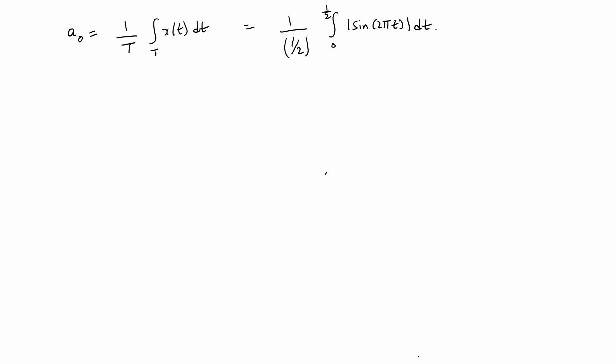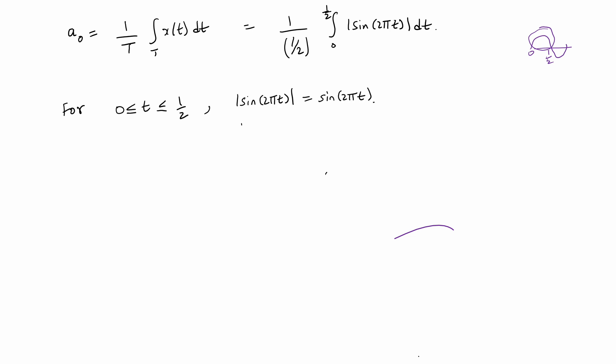When t lies between 0 and 1/2, the absolute value of sin(2πt) is exactly the same as sin(2πt) itself — so we can get rid of the absolute value. This allows us to simplify the integral, and we can write a₀ = 2 × ∫₀^(1/2) sin(2πt) dt.